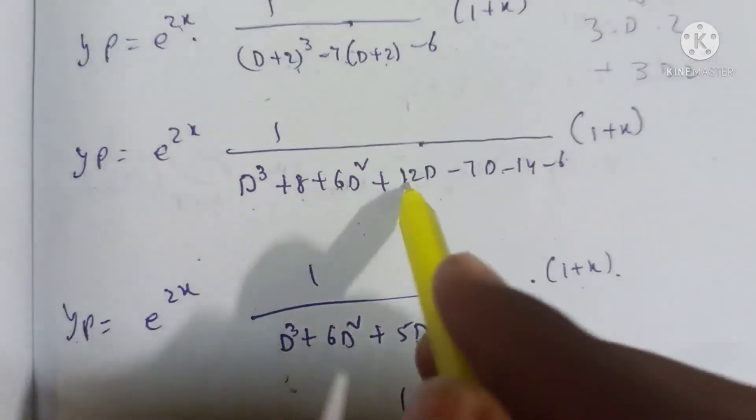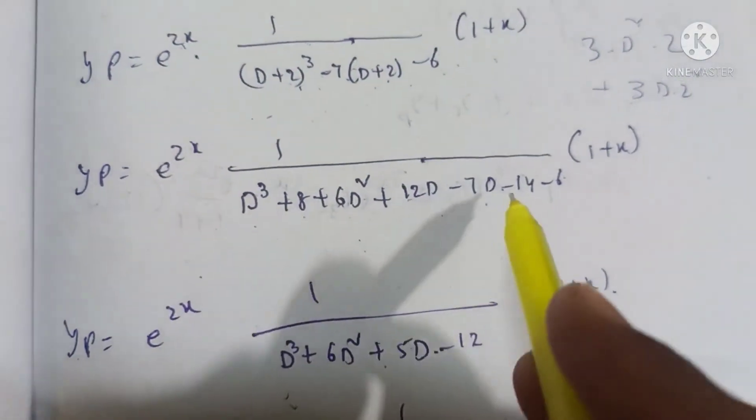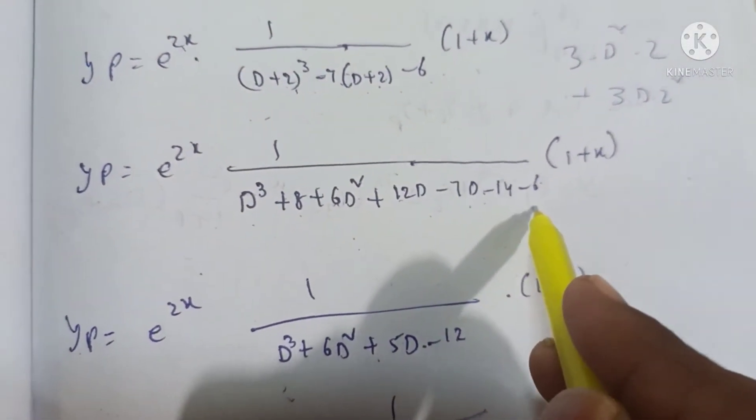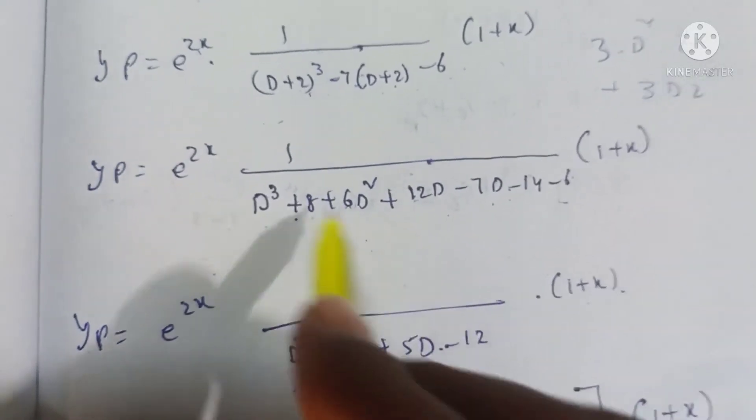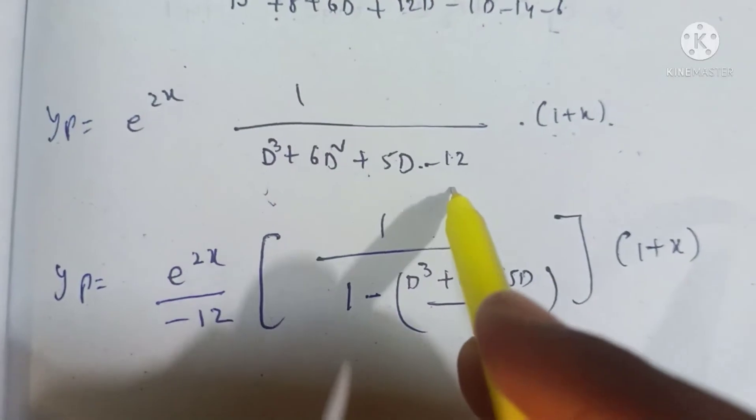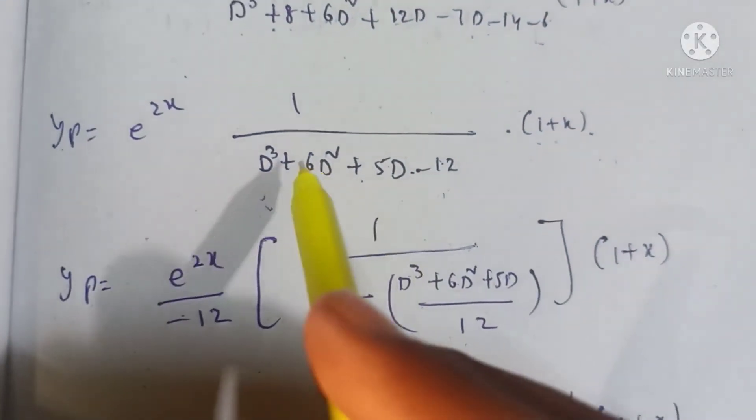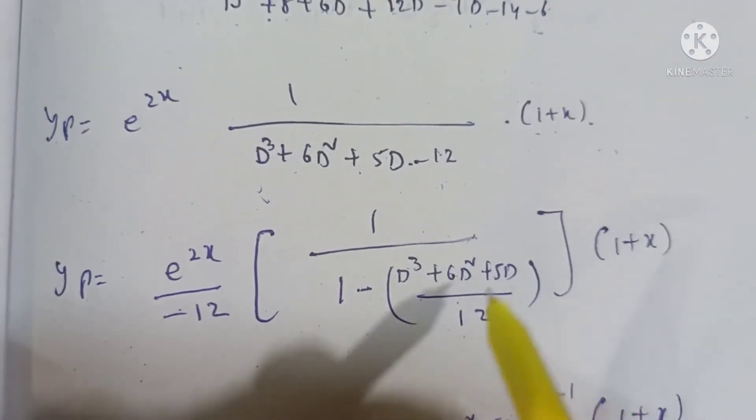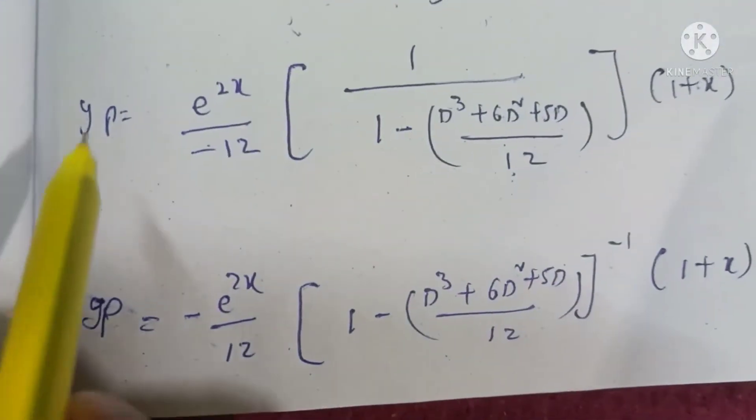We get D³ + 6D² + 12D + 8 - 7D - 14 - 6 into (1 + x). Combining like terms: D³ + 6D² + (12 - 7)D + (8 - 14 - 6) = D³ + 6D² + 5D - 12.